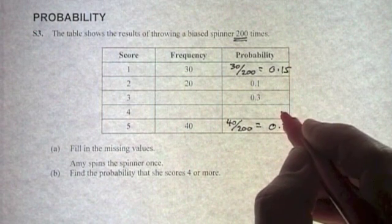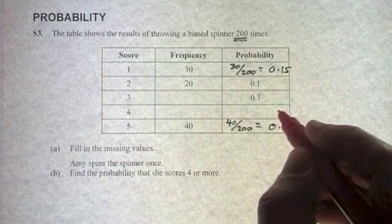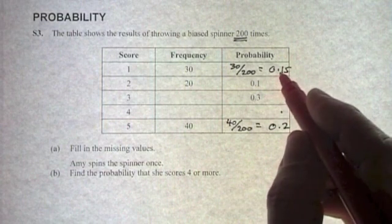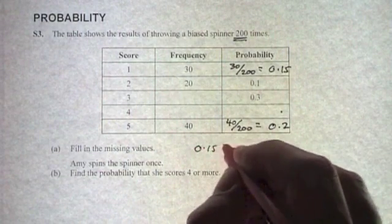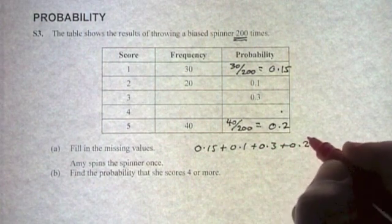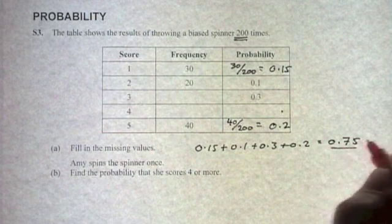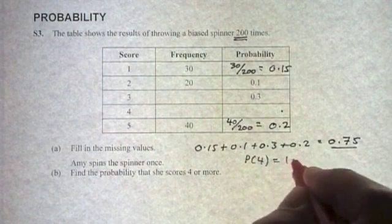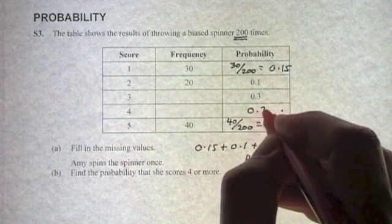Now I can actually work out this one here because I know the total probability of all events of 1, 2, 3, 4, or 5 happening must be 1. If I add up these: 0.15 added to 0.1, added to 0.3, added to 0.2, that comes to 0.75. So that means the probability of 4 must equal 1 minus 0.75, and that's going to be 0.25.